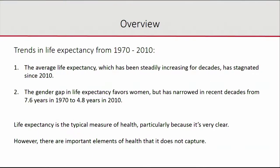Life expectancy has been steadily increasing for quite some time, and it's pretty remarkable when you look at how much it has increased. One thing people have noted is that there has been a big narrowing of the gender gap in life expectancy. In 1970, by this measure, women were expected to live almost eight years longer — an infant girl would be expected to live almost eight years longer than an infant boy — and by 2010, that had declined to only about five years more.